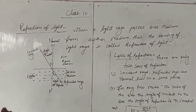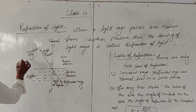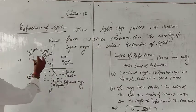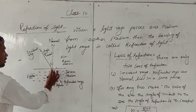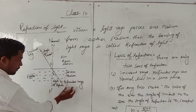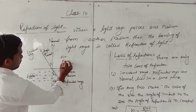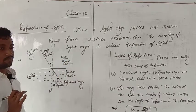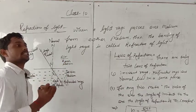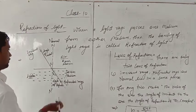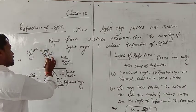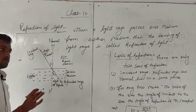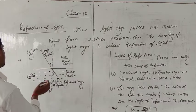Now let's understand this diagram. This is an Incident ray, and what is Reflected ray? The first medium is Air. The light rays are coming from the air — the coming rays, what do we call it? Incident rays.